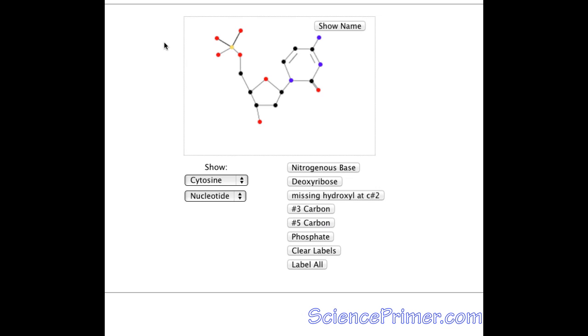When the page first loads, a ball and stick cartoon of the nucleotide cytosine is shown. Carbon atoms are in black, oxygen in red, nitrogen in blue, and phosphorus in yellow.